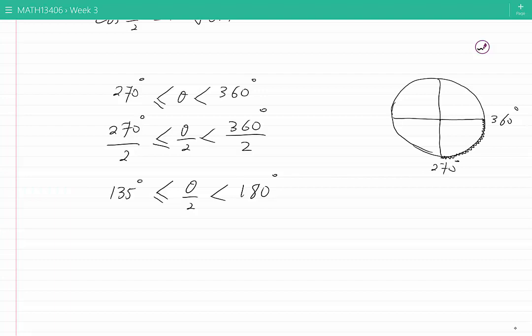135° will start from the middle of the second quadrant and 180° would be down here. So θ/2 would be somewhere over here. That means that θ/2 is in the second quadrant.